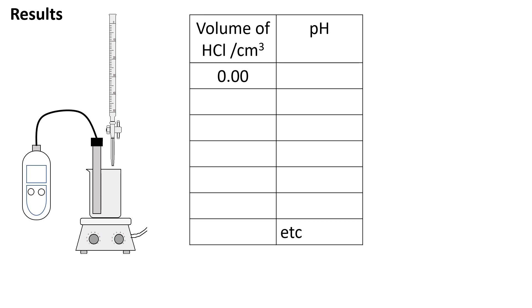Hydrochloric acid is added 1 cm³ at a time from the burette. The volume of HCl is recorded to two decimal places as well as the pH. Continue this process until a total of 50 cm³ of hydrochloric acid has been added.